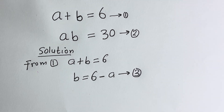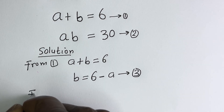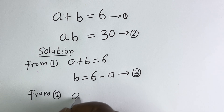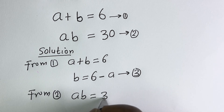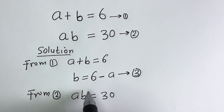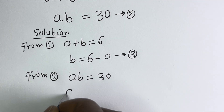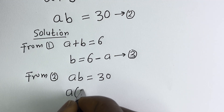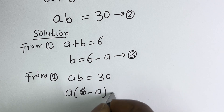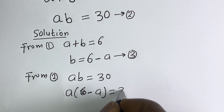Then from equation 2, AB is equal to 30. You can now substitute for B: A times (6 minus A) is equal to 30.